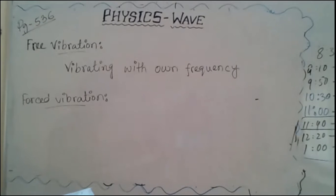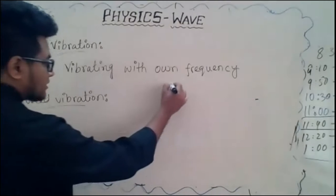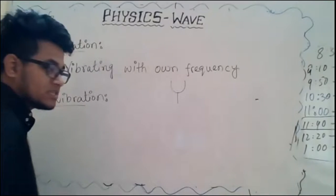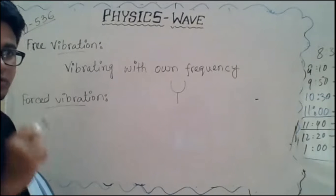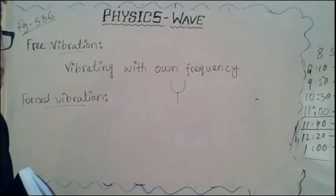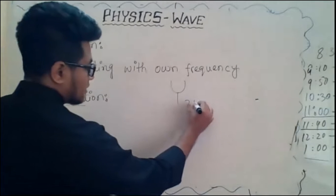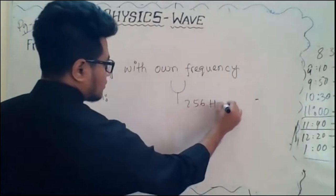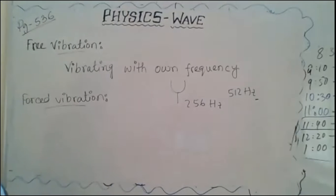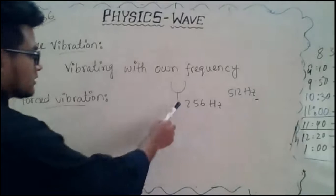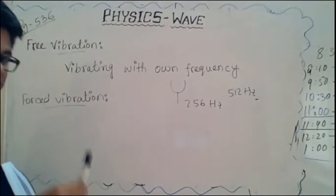Free vibration: every vibrating body has its own frequency. I hope you are already familiar with the tuning fork — this Y-shaped thing. Every tuning fork will have a fixed frequency, for example 256 Hertz or 512 Hertz. Hertz is the unit of frequency. That means the frequency of a tuning fork is fixed.